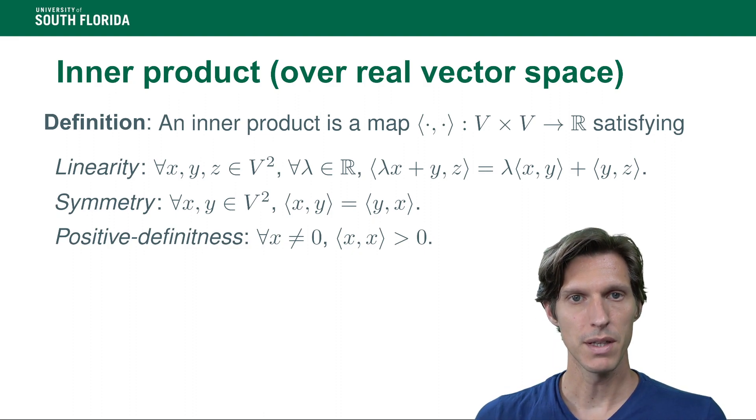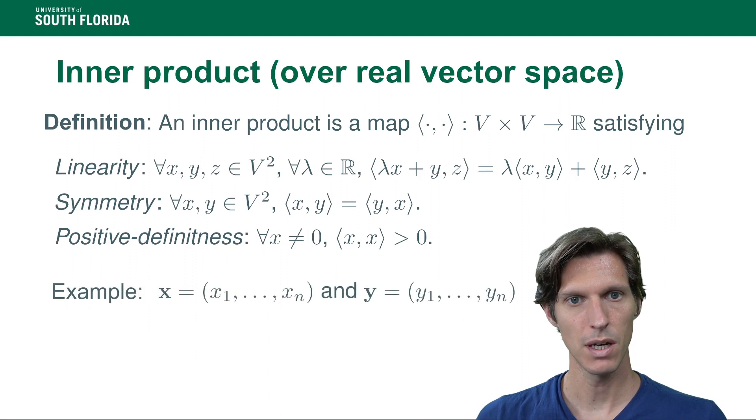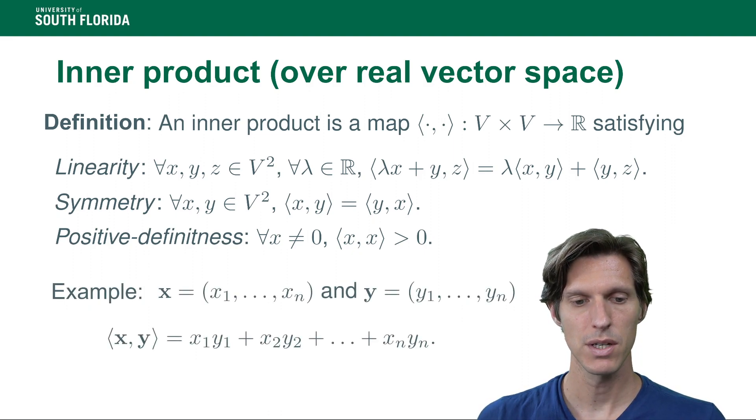Now symmetry and linearity imply also linearity with respect to the second coordinate. A canonical example is the traditional dot product where x·y is the sum of xᵢyᵢ.